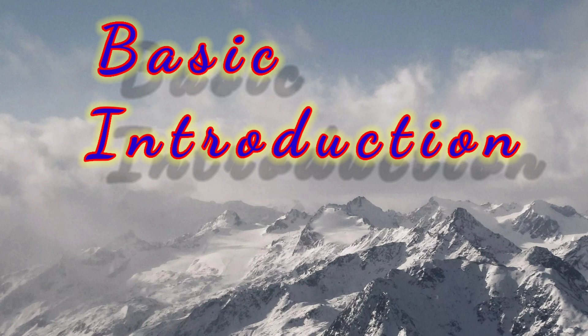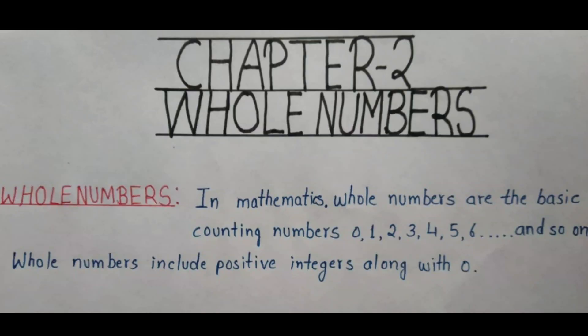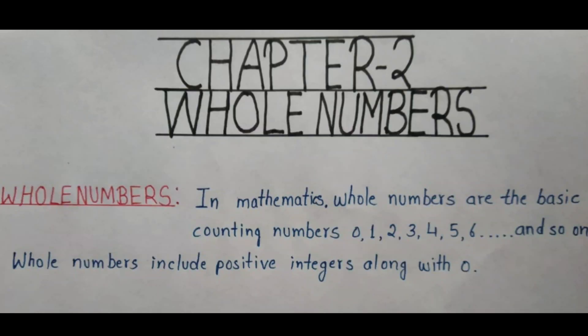Before starting, let's discuss some basics and what type of questions we'll deal with in this chapter. First, what are whole numbers? In mathematics, whole numbers are the basic counting numbers: 0, 1, 2, 3, 4, and so on. Whole numbers include positive integers along with 0. We usually count 1, 2, 3, 4, 5, 6 — but when we add 0 to the regular counting, it becomes whole numbers.